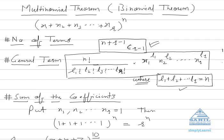Hello, dear. Our next topic is the binomial theorem, and we are particularly reading the multinomial theorem. The format of the multinomial theorem is x1 plus x2 plus x3 up till xr, whole raised to power n.